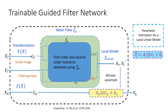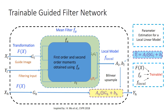Once obtained, AL and BL are bilinearly upsampled to get AH and BH, from which the final output is obtained by a linear transformation of the high resolution guide image GH. The components F, Fμ, and Flocal are all implemented as trainable convolutional blocks. Please refer to our paper for more details.